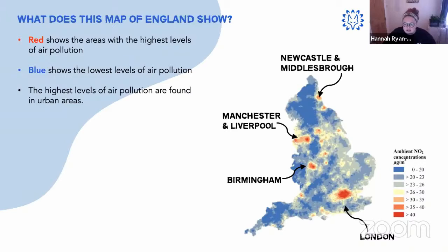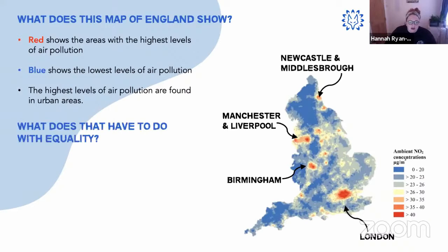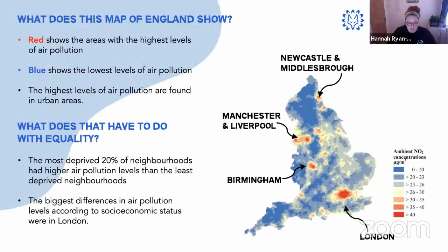Cities are affected worse than rural areas — but what does that have to do with equality? Quite a lot, actually. The most deprived 20% of neighborhoods have higher air pollution levels than the least deprived neighborhoods. If you earn more money, you're more likely to live in an area where air pollution isn't a problem. The biggest difference in air pollution levels according to socioeconomic status was actually found in London.